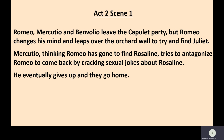In Act 2, Scene 1, we have Romeo, Mercutio, and Benvolio, who have all left the Capulet party. But Romeo changes his mind and leaps back over the orchard wall to try and find Juliet, so he runs away from his friends. Mercutio, thinking Romeo has gone to find Rosaline, tries to antagonise Romeo to come back by cracking sexual jokes about Rosaline. But Mercutio eventually gives up and both he and Benvolio go home.